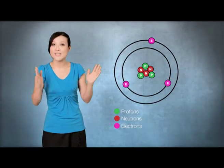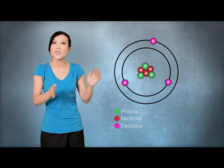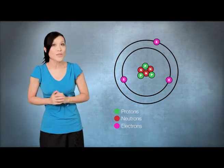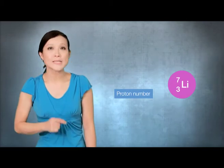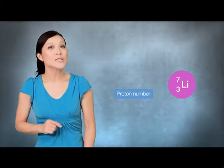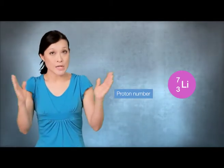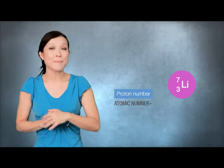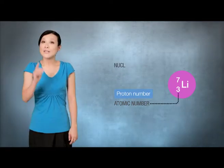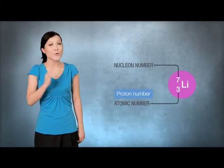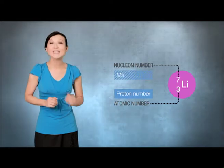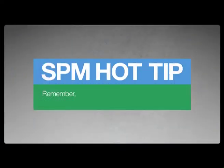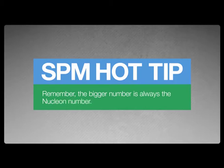What's very important to know is the difference between the proton number and the nuclear number of an element. The proton number is the number of protons inside the nucleus — it is also known as the atomic number. The nuclear number is the number of protons and neutrons — it is also known as the mass number. Remember, the bigger number is always the nuclear number.